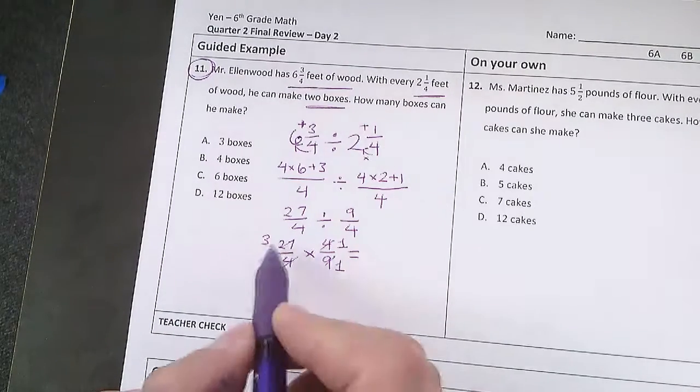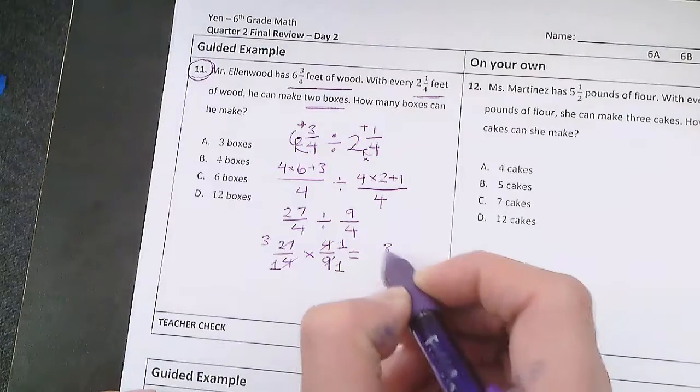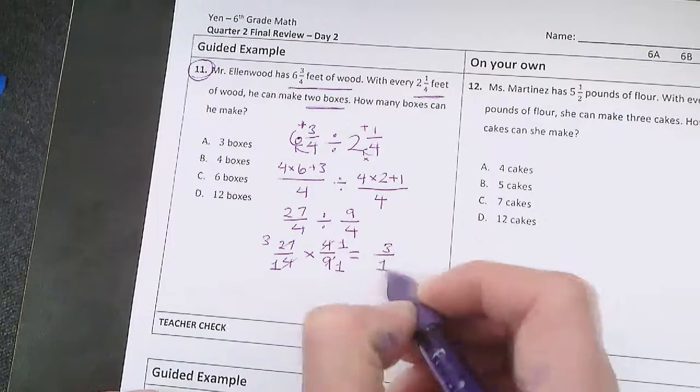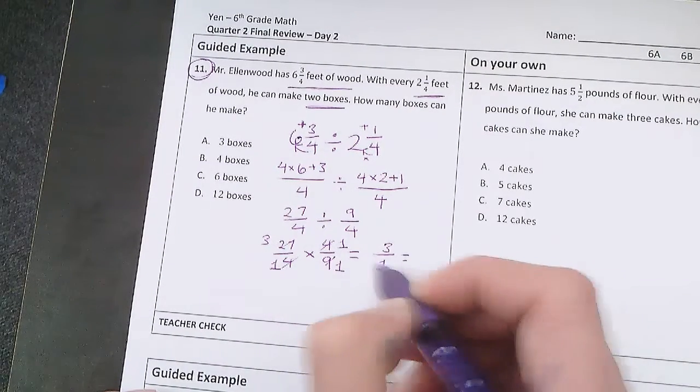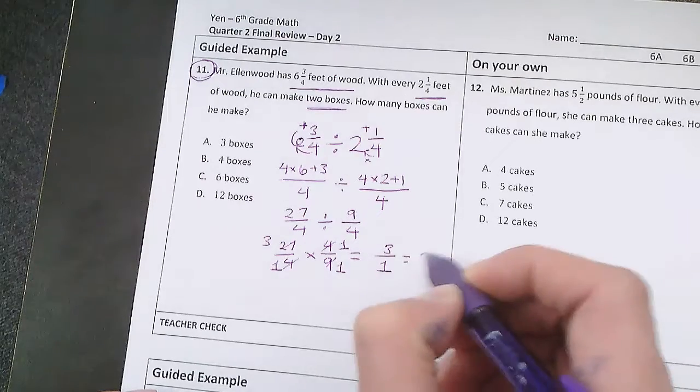And now I can just multiply across. 3 times 1 is 3. 1 times 1 is 1. And 3 over 1 is 3 wholes which is the same thing as 3.